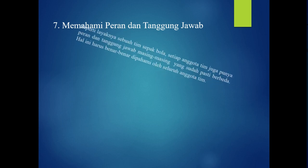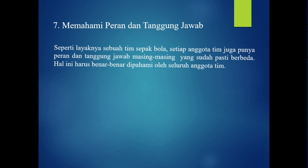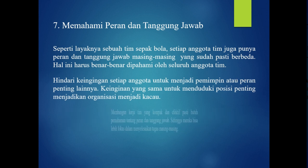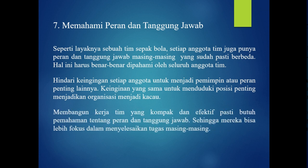Tujuh, memahami peran dan tanggung jawab. Seperti layaknya sebuah tim sepak bola, maka setiap anggota tim juga punya peran dan tanggung jawab masing-masing yang sudah pasti berbeda. Hal ini harus benar-benar dipahami oleh seluruh anggota tim. Hindari keinginan setiap anggota untuk menjadi pemimpin atau peran penting lainnya, karena keinginan yang sama untuk menduduki posisi yang penting menjadikan organisasi menjadi kacau. Membangun kerja tim yang kompak dan efektif pasti butuh pemahaman tentang peran dan tanggung jawab, sehingga mereka bisa lebih fokus dalam menyelesaikan tugas masing-masing.